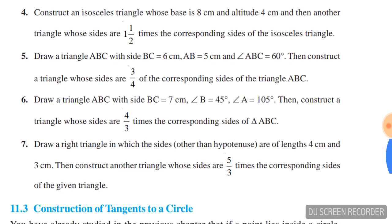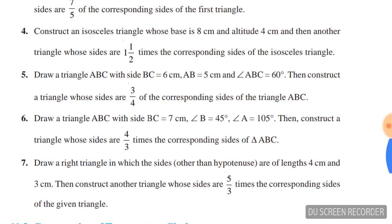Question number five: draw triangle ABC with side BC = 6 cm, AB = 5 cm, angle ABC = 60°, then construct a triangle whose sides are three-fourths of the corresponding sides of triangle ABC.